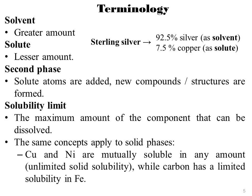Second phase: as solute atoms are added, new compounds or structures are formed, or solute forms local precipitates. What is solubility limit? The solubility limit of a component in a phase is the maximum amount of the component that can be dissolved in it. For example, alcohol has unlimited solubility in water, sugar has a limited solubility, and oil is virtually insoluble. The same concept applies to solid phases.